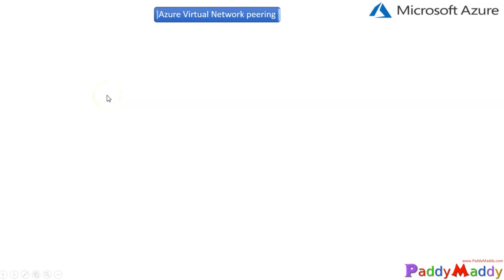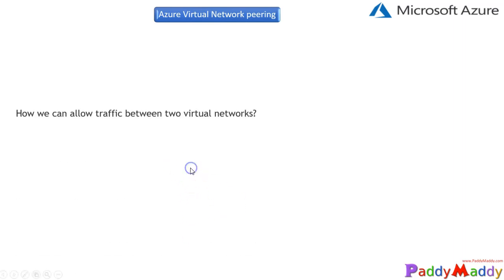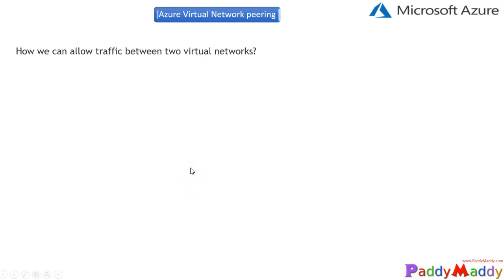Hello and welcome back. In this lecture we're going to learn about Azure Virtual Network Peering. Peering will allow you to connect from one network to another network. By default, the VNets cannot communicate with one another — the communication is fully blocked, meaning they are completely isolated networks.